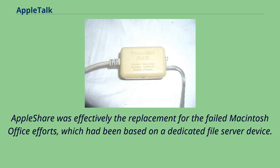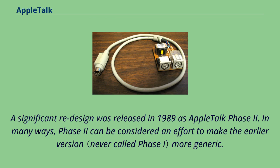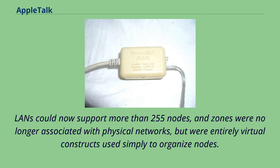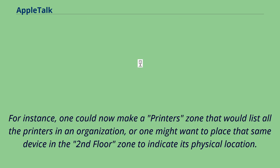A significant redesign was released in 1989 as AppleTalk Phase 2. In many ways, Phase 2 can be considered an effort to make the earlier version more generic. LANs could now support more than 255 nodes, and zones were no longer associated with physical networks but were entirely virtual constructs used simply to organize nodes. For instance, one could now make a printer's zone listing all printers in an organization, or place a device in a 'second floor' zone to indicate its physical location.